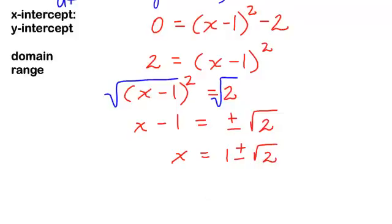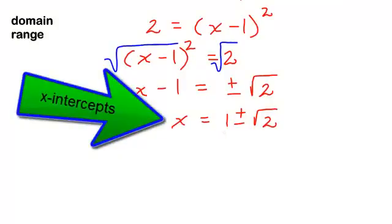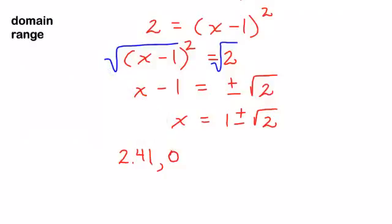Since I am going to graph this, I am going to change this to a decimal with a little help from my calculator. 1 plus radical 2 would be approximately 2.41. Remember, this is the x-intercept, and that is when y is 0. And 1 minus radical 2 will be approximately negative 0.41. I got these x-intercepts by letting y equal 0.